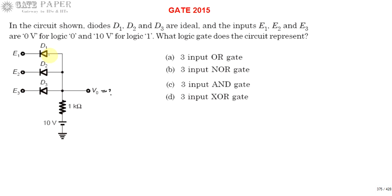These are ideal diodes — we must remember that. Ideal diode characteristics: an ideal diode acts as a short circuit when forward biased and an open circuit when reverse biased. The meaning of forward bias is whenever the P-side voltage is more positive than the N-side voltage, the diode is said to be in forward bias. Otherwise, if the P-side voltage is less positive than the N-side voltage, then the diode is said to be in reverse bias.